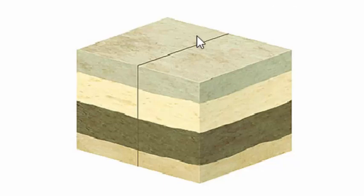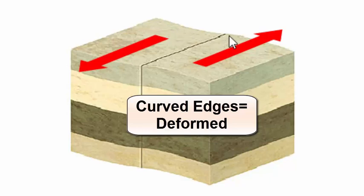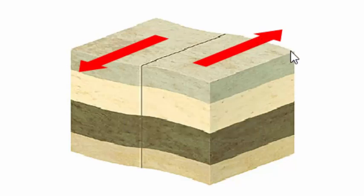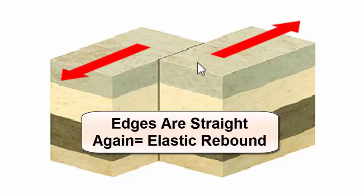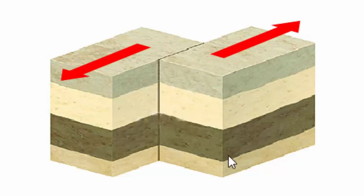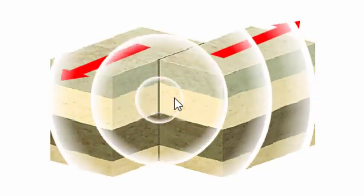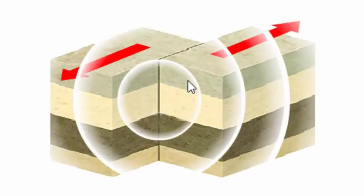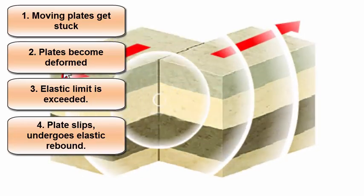In this diagram we have two tectonic plates moving in opposite directions. Where two tectonic plates meet, the break in the rock is called a fault. The edges start nice and straight, but as the plates move and stress builds up, they deform and become curved. Eventually the rocks exceed their elastic limit — too much force causes them to break and slip. When they break and slip, the edges return to their original straight shape; they've rebounded. This releases seismic energy that travels through the earth, causing the ground to shake and potentially cause damage. Plates move, rock deforms, the elastic limit is exceeded, the rock breaks, and when it slips it returns to its original shape releasing energy.